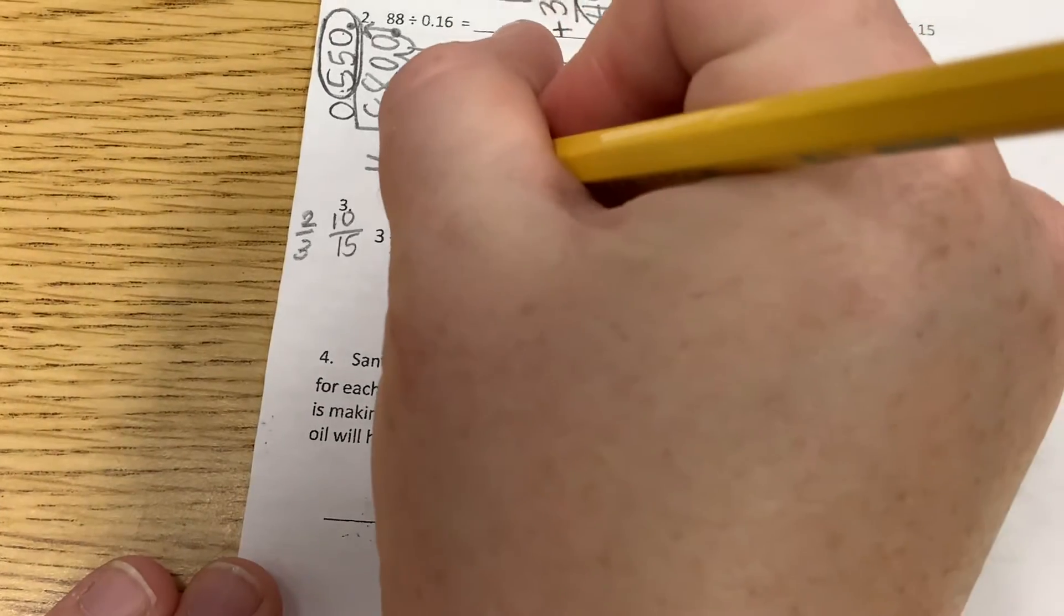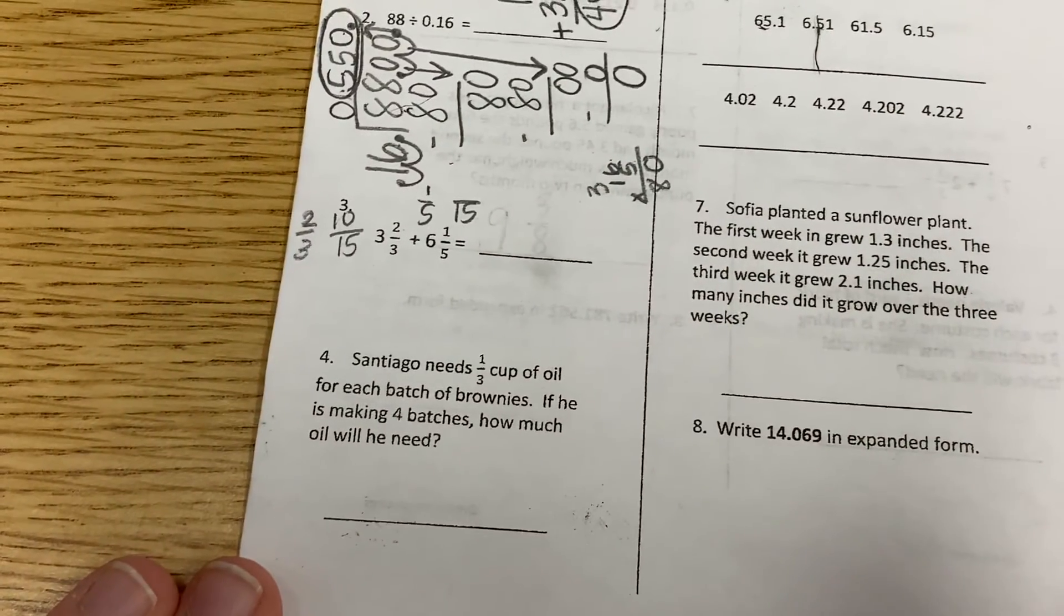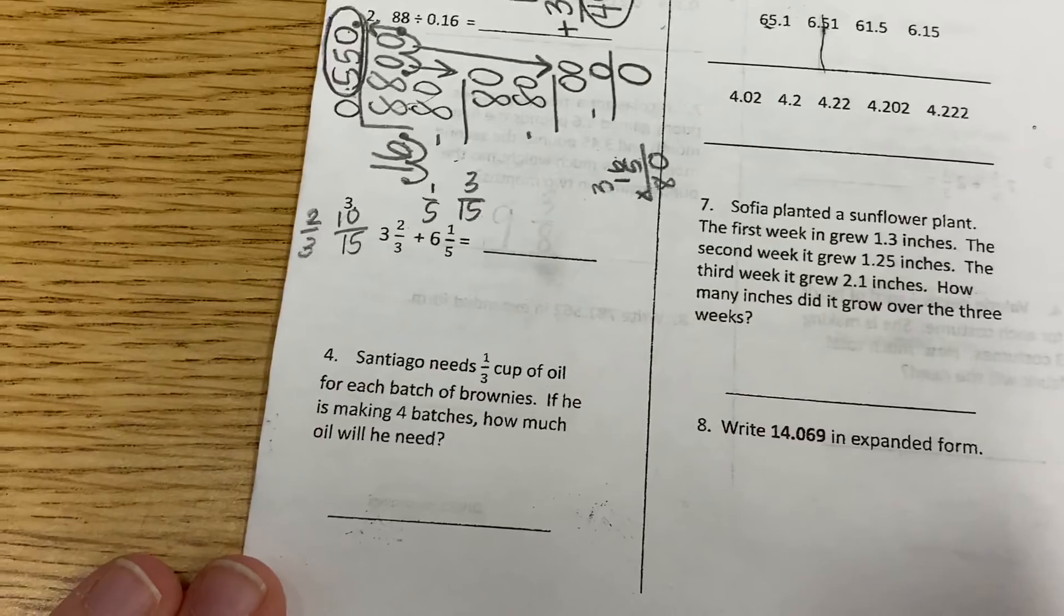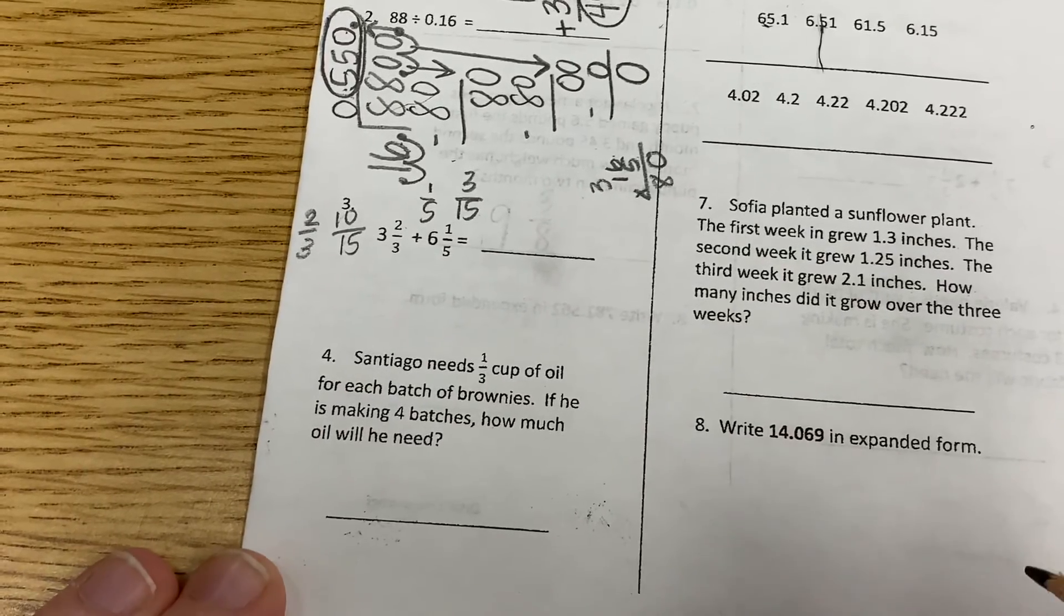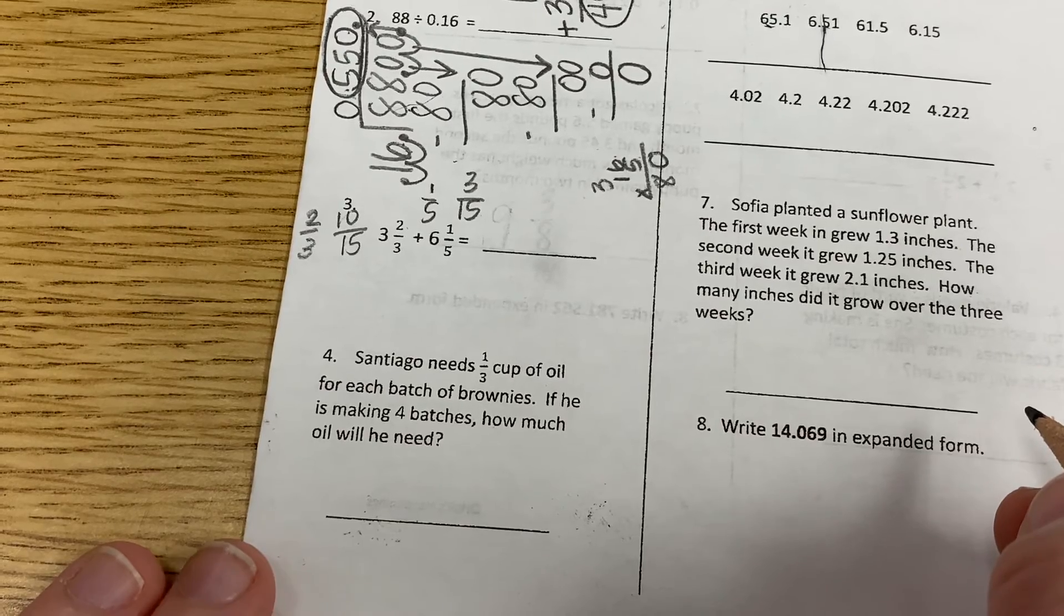1 fifth. What did we get, Kalia? Sure did. What did we multiply to get 3 fifteenths? We multiplied by 3. Do we agree? Yes.